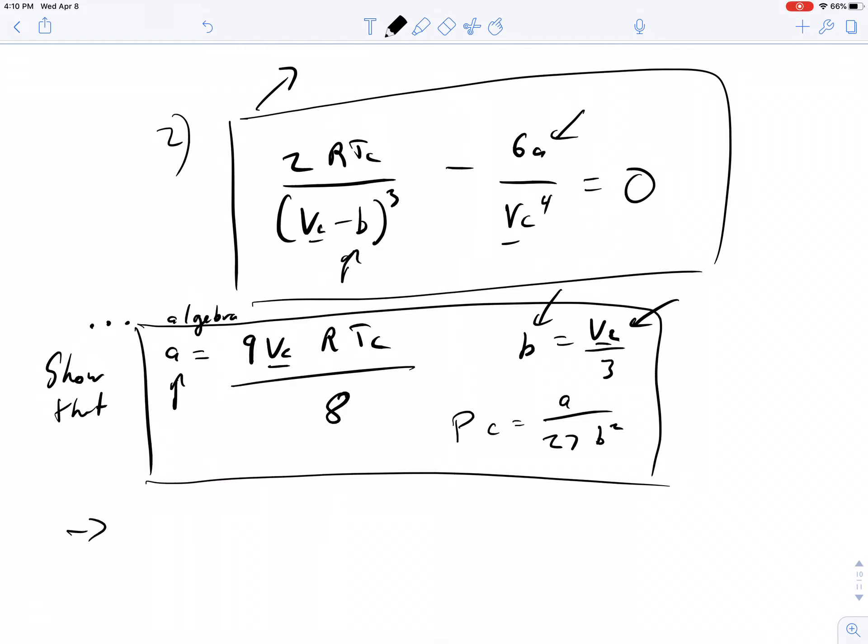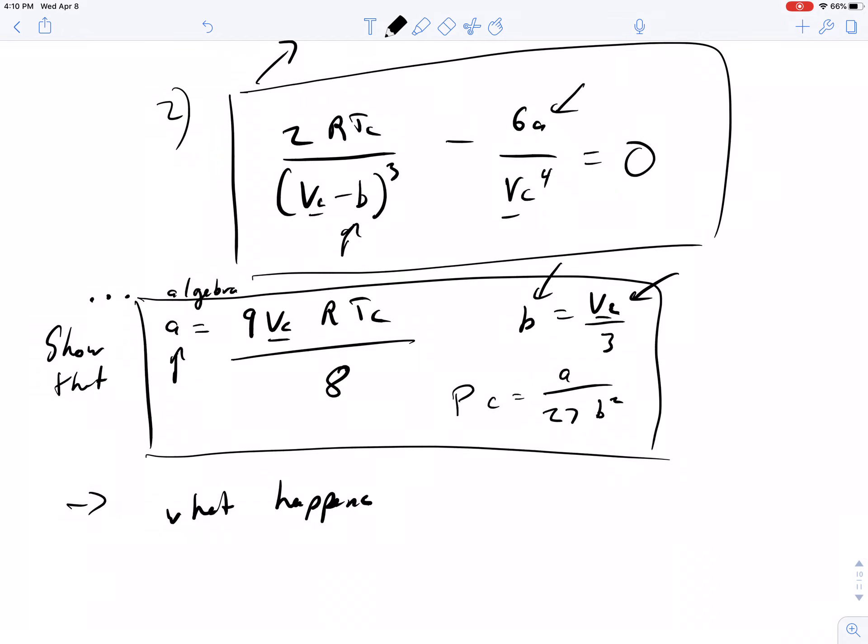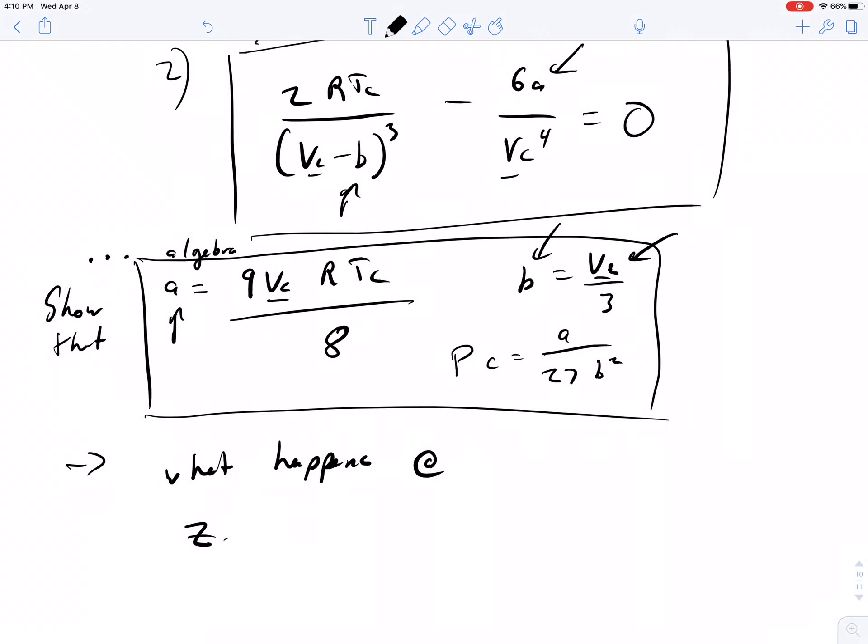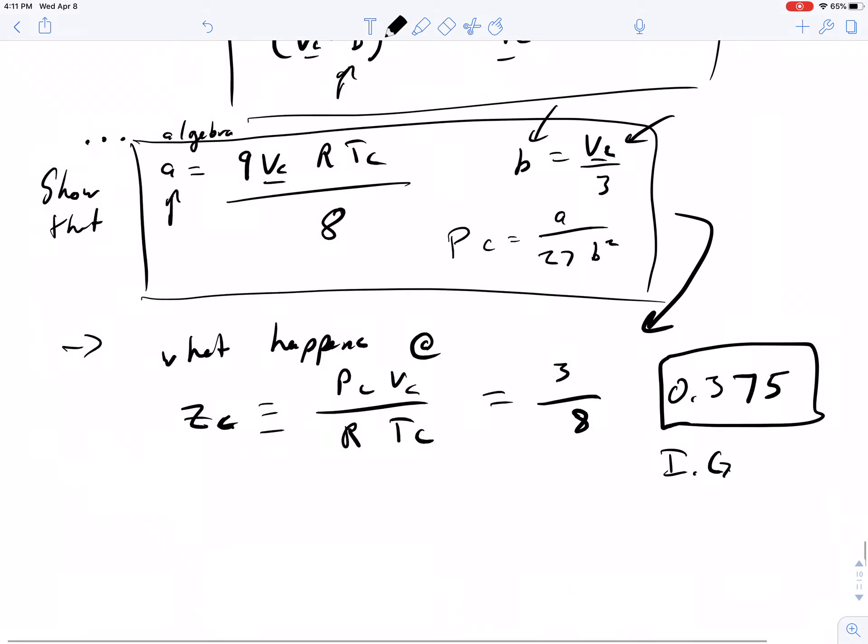What happens at ZC? What is the critical Z here? We talked about this compressibility factor, and we defined the compressibility factor ZC as PC VC over R times TC. Substituting in for the Van der Waals equation of state into this gives us a value of 3 over 8. Please show yourself that that is true. This equals 0.375. It's a lot better than the ideal gas compressibility factor at this critical temperature, pressure, and volume of 1, but still not quite all the way there.